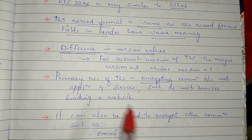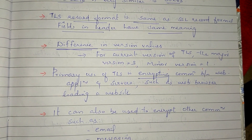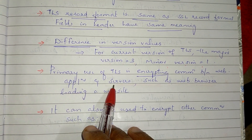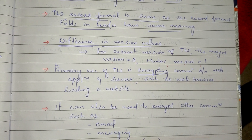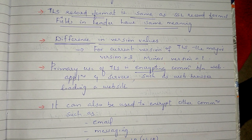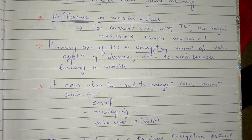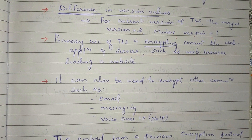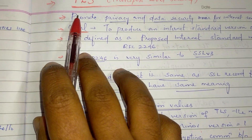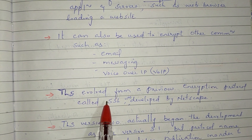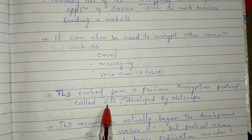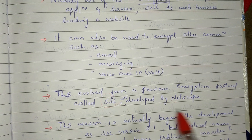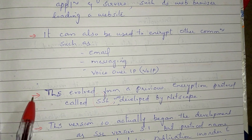TLS provides security by encrypting transmitted data. The primary use of TLS is encrypting communication between web applications and servers — for example, when a web browser loads a website. It also encrypts communications such as email, messaging, and VoIP. TLS is the next generation of the previous encryption protocol, SSL.